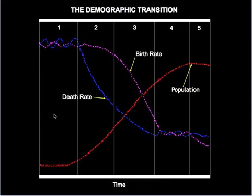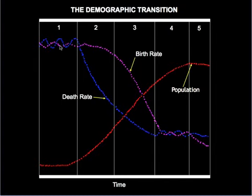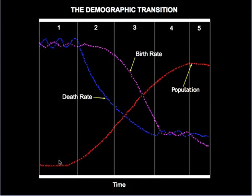During the 20th century it became clear that as countries develop they undergo a demographic transition. In states of underdevelopment and poverty, both death rate and birth rate are high. Countries in this stage are referred to as being in stage one of the demographic transition. Very few countries on planet Earth remain in this state today.